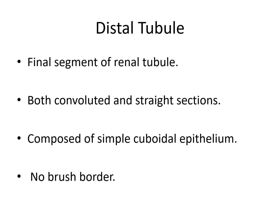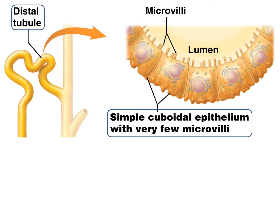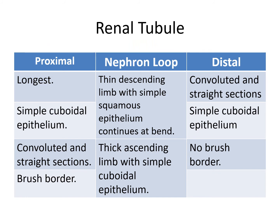The final segment is the distal tubule. Like the proximal tubule, there are both convoluted and straight regions, and it is composed of simple cuboidal epithelium. However, there is no brush border and very few microvilli. To summarize the renal tubule: the proximal tubule is the longest with simple cuboidal epithelium, brush border, and convoluted and straight regions. The nephron loop has a thin descending limb of simple squamous epithelium and a thick ascending limb of simple cuboidal epithelium. The distal tubule is similar to the proximal tubule but lacks a brush border.